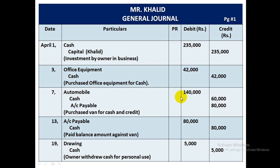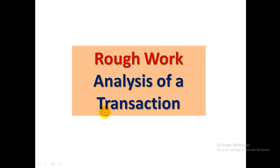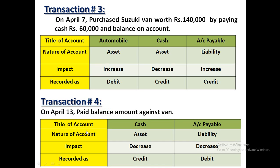Journal me recording: automobile debit, cash credit, baaki amount se account payable credit. Narration: 'Purchased van for cash and on credit.'